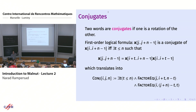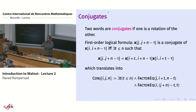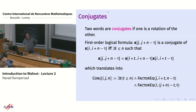Another basic property in combinatorics on words is conjugacy: two words are conjugates if one is a cyclic shift of the other. You can cut a word into two pieces, wrap around, and read from wherever you cut — those should match the other word. A predicate checks that the factors of length n starting at positions i and j are cyclic shifts of each other.